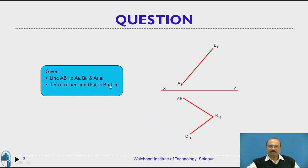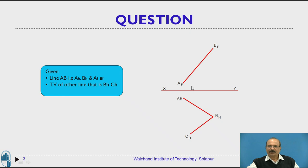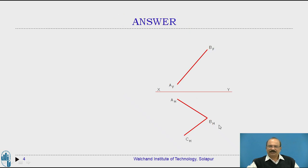The top view of the other line is BHCH, and this is a given condition. Now we are expected to locate point C in the front view as well as to draw the perpendicular line. The additional point CH is given in the top view, and we have to identify the position of point C in the front view.